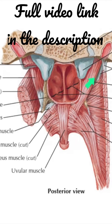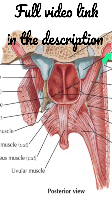The levator veli palatini muscle arises from the under surface of the apex of the petrous part of the temporal bone, in front of the opening of the carotid canal. Here you can see this is the carotid canal, and in front of its opening, the muscle takes origin from the under surface of the apex of the petrous part of the temporal bone.